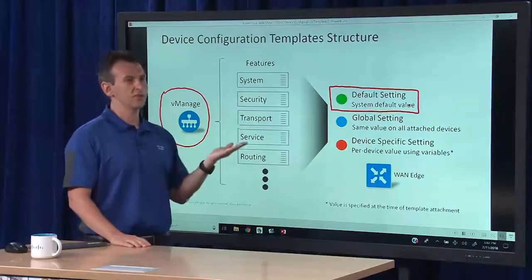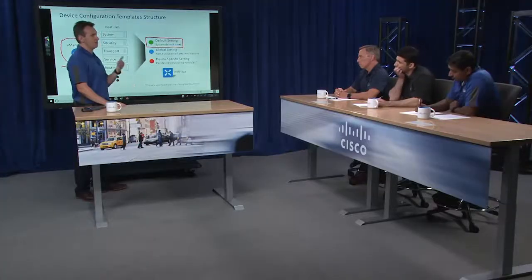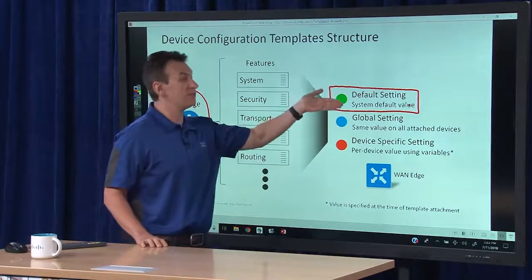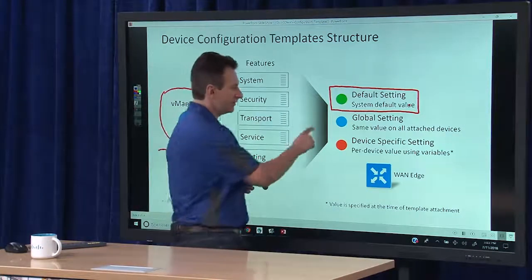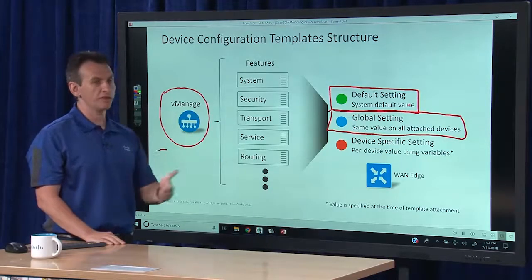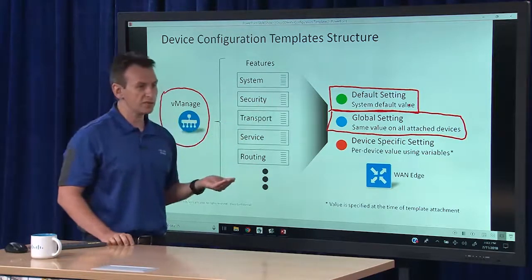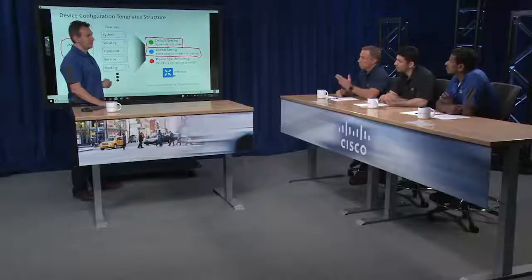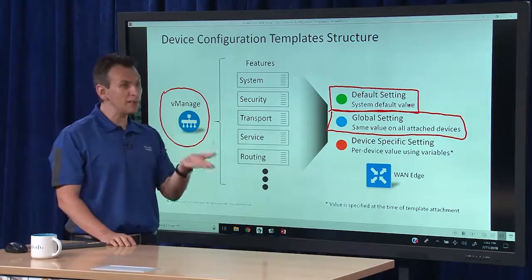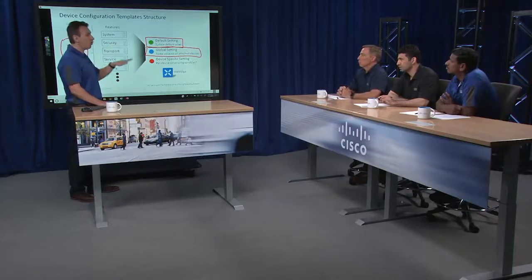This is very similar to what you would encounter with existing Cisco non-SD-WAN devices — there's a set of defaults you never had to configure, and the system comes with those default configs. Now the next one is a global setting. If you recall, when configuration templates are applied to different devices, there could be settings that are common across all devices. Things like an SNMP community string, interface assignments, AAA servers, SNMP trap destinations, NTP servers — anything you want to change from default yet keep the same across all devices you are deploying.